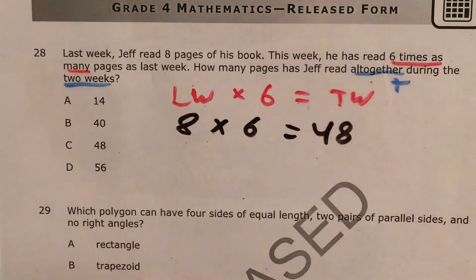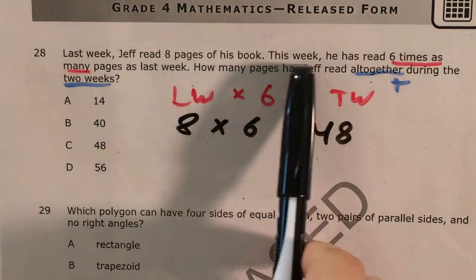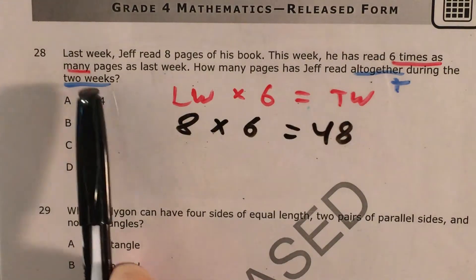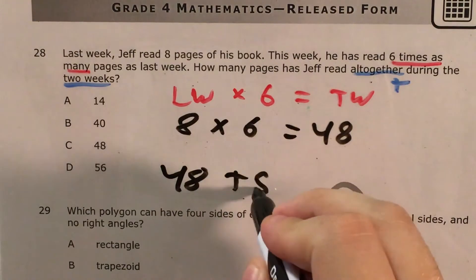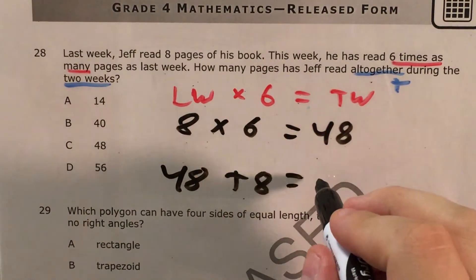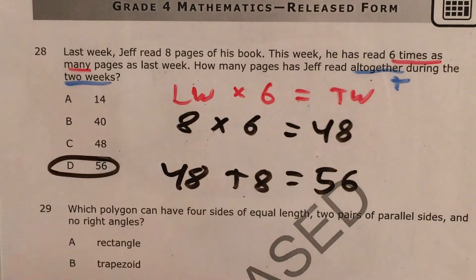Now we are not done even though I see that 48 is one of my answer choices, because remember the question is asking how many pages has Jeff read all together during the two weeks. So I need to add my last week number and my this week number, 48 plus 8, and that gets me whether you're using a calculator or you know it in your head, you get 56 and that's our answer, 56 pages.